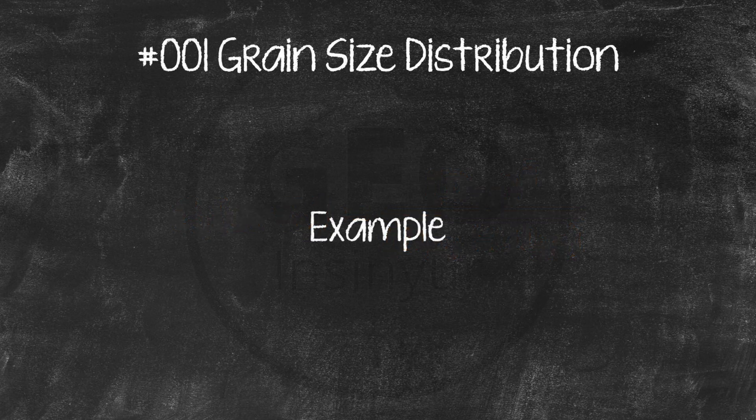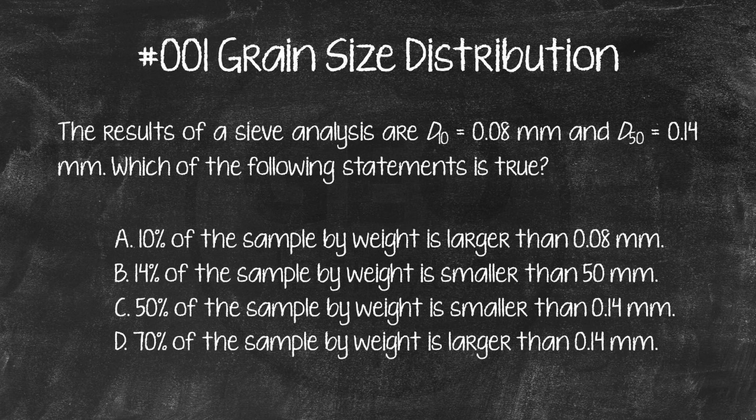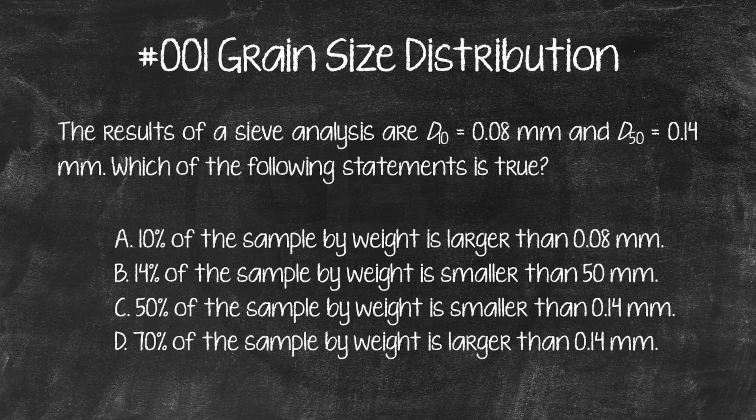Example. The results of a sieve analysis are d10 equals 0.08 millimeters and d50 equals 0.14 millimeters. Which of the following statements is true? A. 10% of the sample by weight is larger than 0.08 millimeters. B. 14% of the sample by weight is smaller than 50 millimeters. C. 50% of the sample by weight is smaller than 0.14 millimeters. Or D. 70% of the sample by weight is larger than 0.14 millimeters.